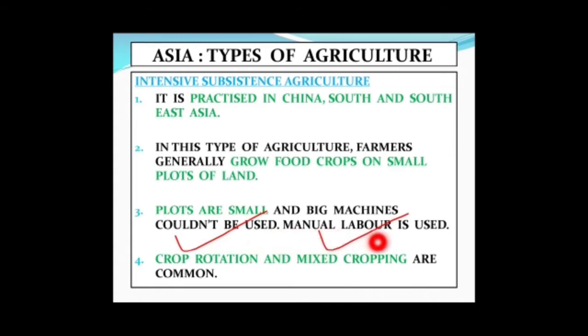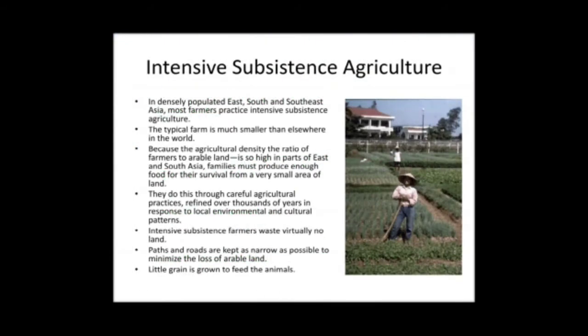In mixed cropping, two or more crops are grown together on the same farm at the same time. In mixed farming, animals are also kept on the farm so the farmer can earn extra income — for example, birds or cattle are kept so that milk can be fetched and sold in the market. The farms are very small and passages between them are very narrow so that maximum land can be used for growing crops.